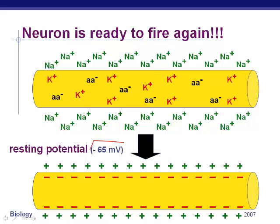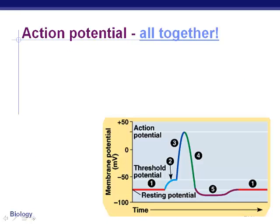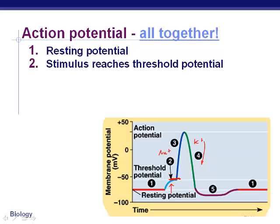Now the neuron is ready to fire again — it's at negative 65 millivolts. As soon as there's a new stimulus, those sodium channels open and the process starts once more. To recap: we have our resting potential at about minus 65. The stimulus must reach a certain threshold — once it reaches that threshold it will go no matter what. As sodium rushes in, the voltage rises; then potassium is kicked back out and it drops back down.